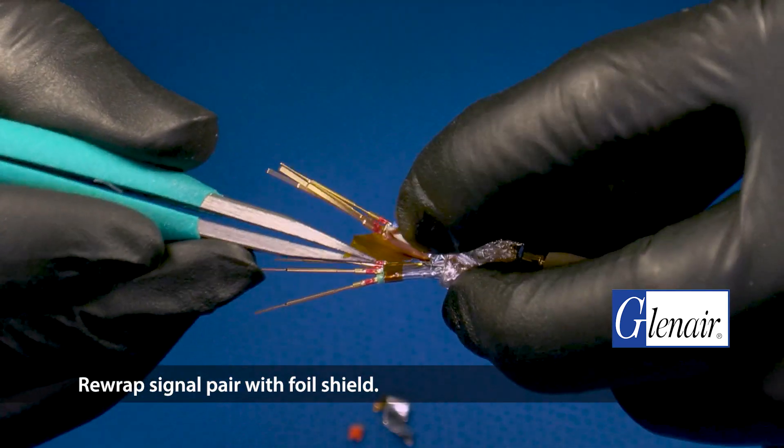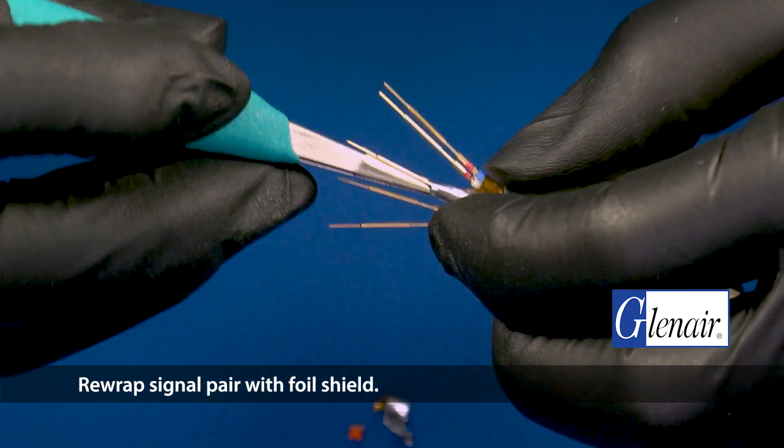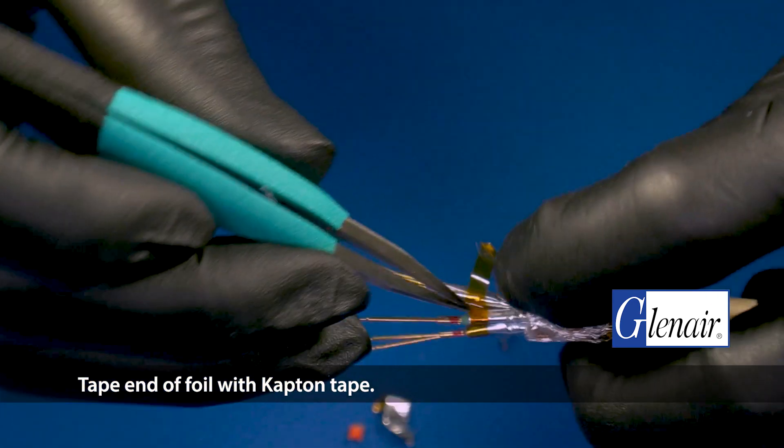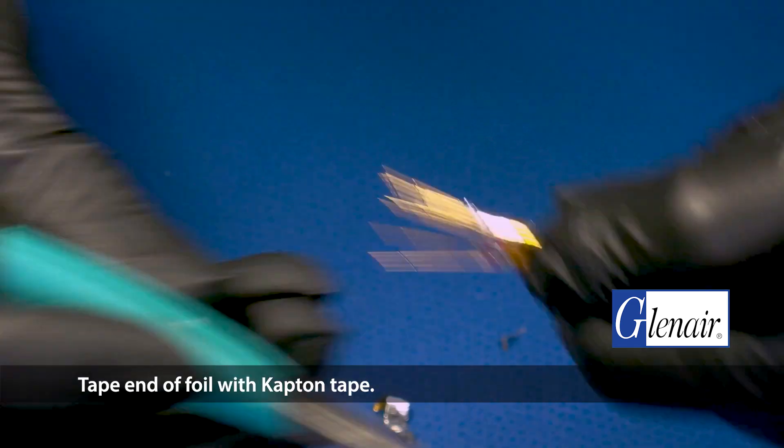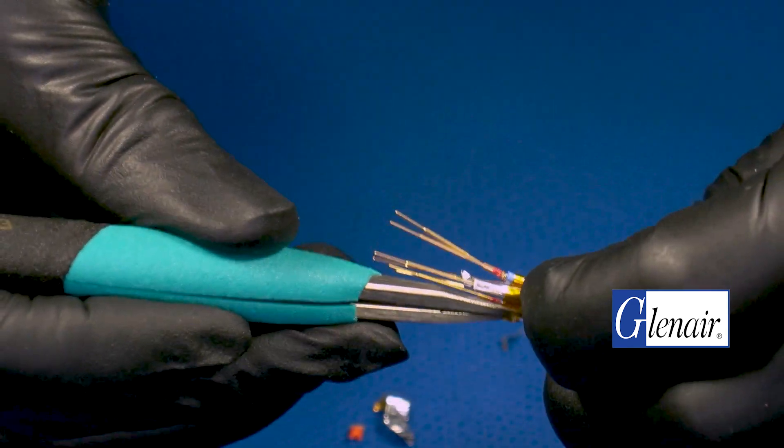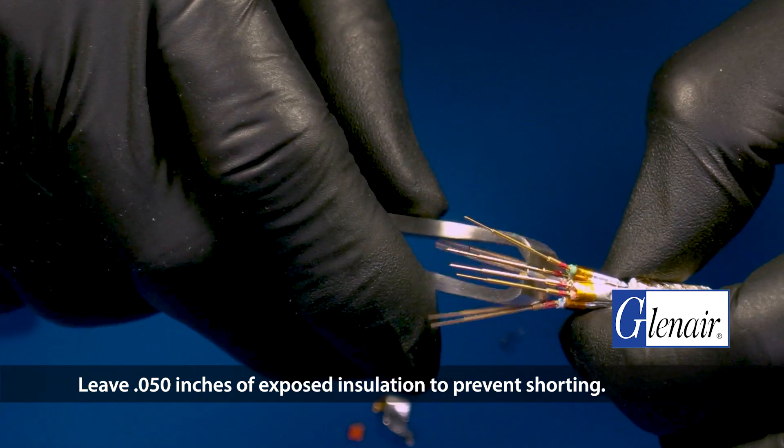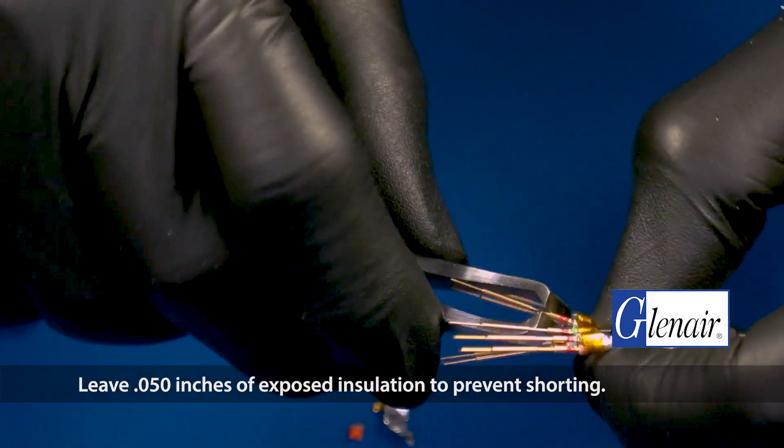Re-wrap signal pair with foil shield. Tape end of foil with Kapton tape. Leave 50 thou inches of exposed insulation to prevent shorting.